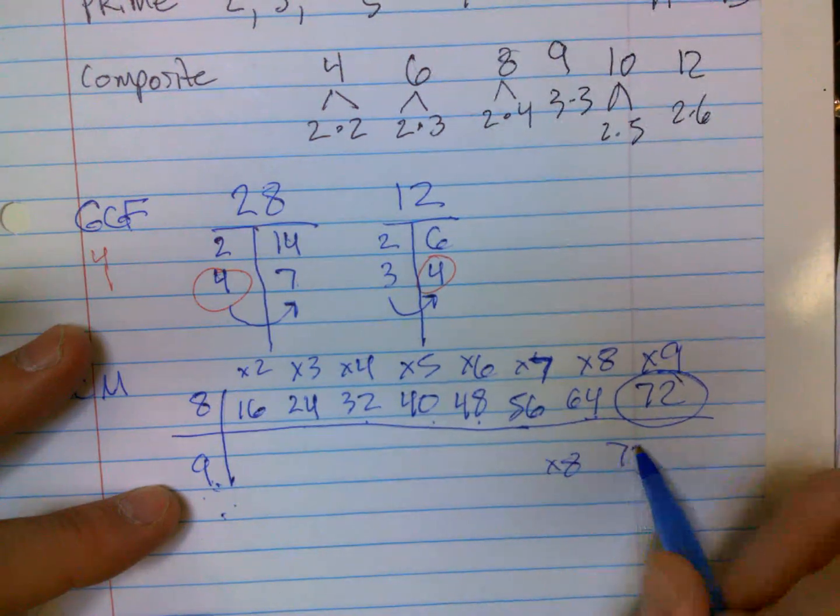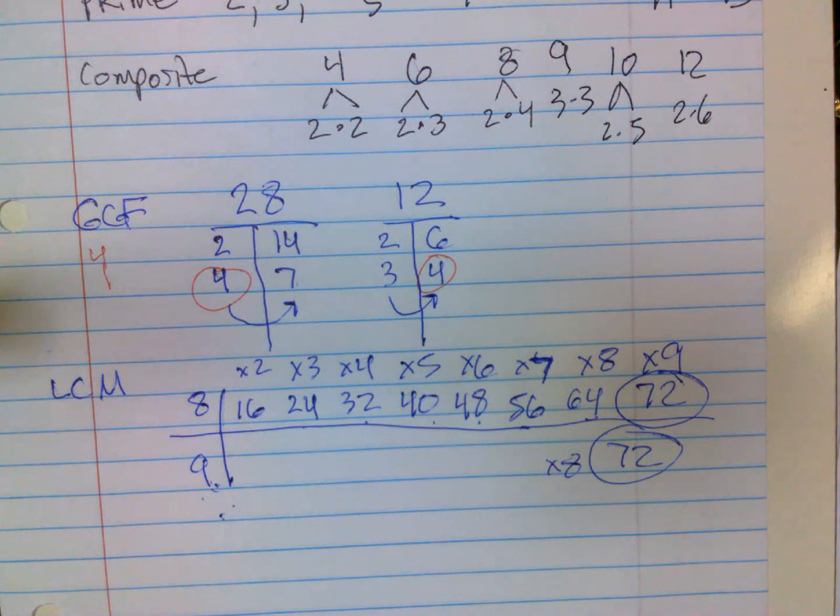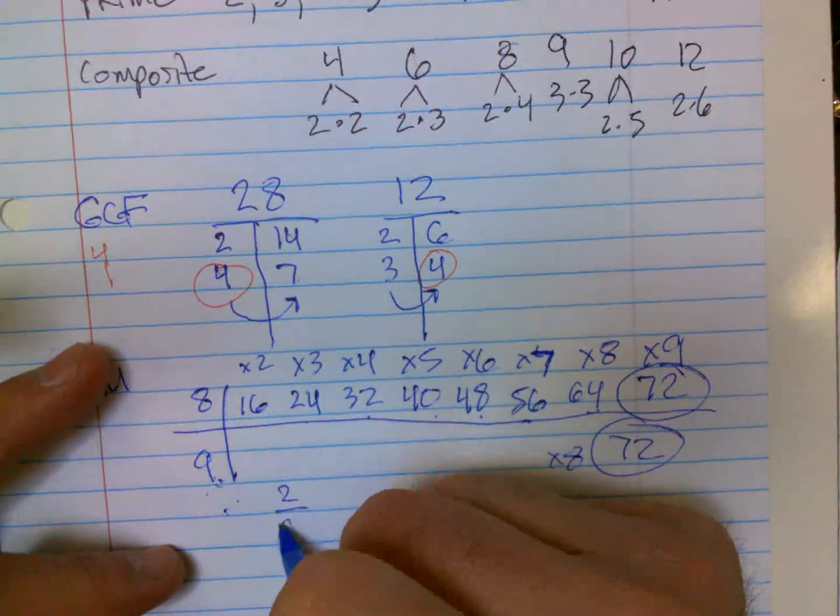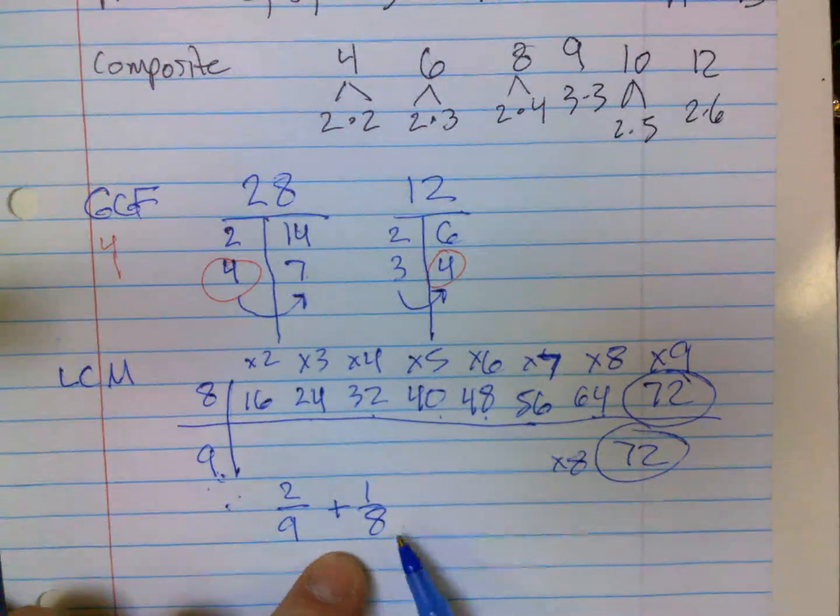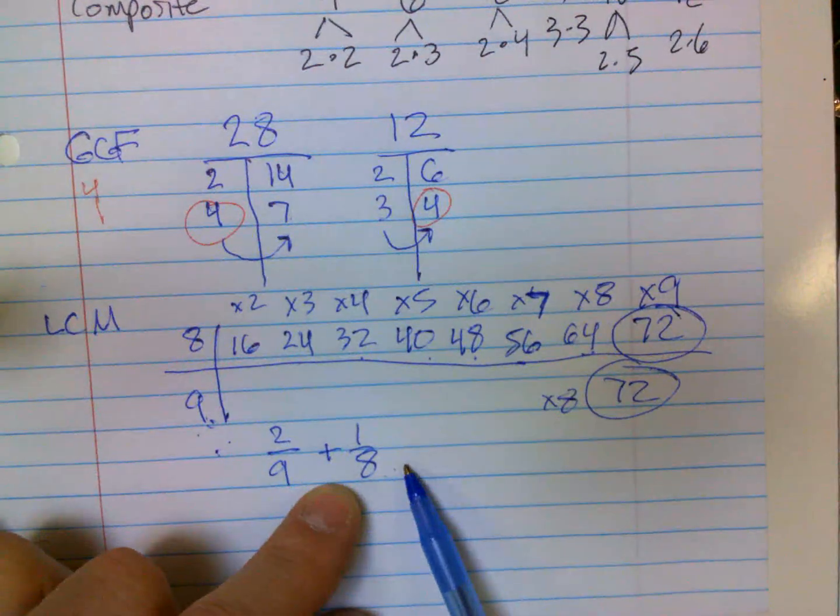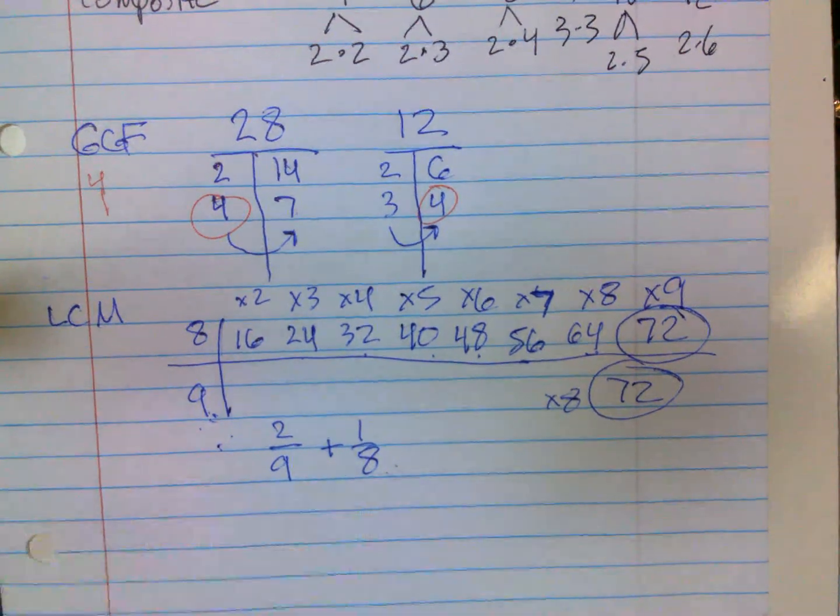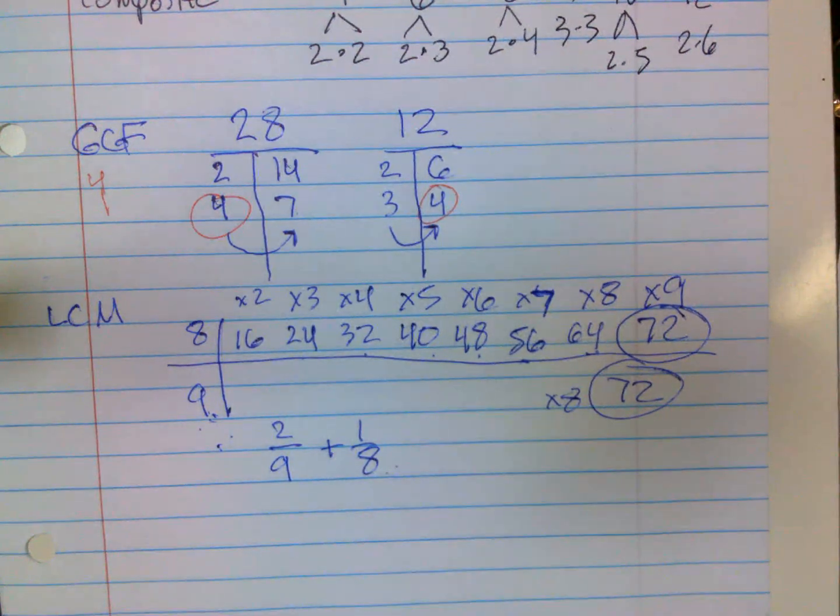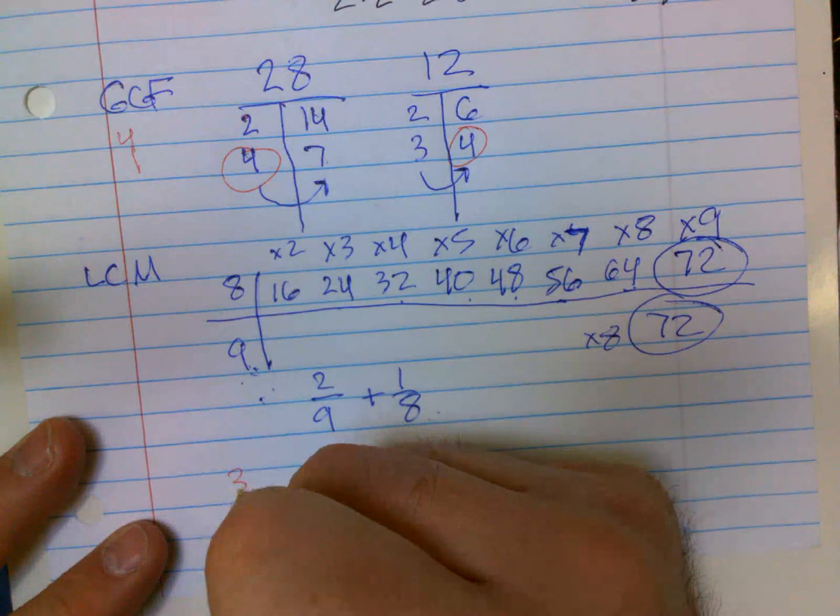So 72 would be what I would change the bottom to. So if I had two ninths plus one eighth, you would have to change the bottoms to 72. That's why you use least common multiples. Now sometimes we have like three and nine.